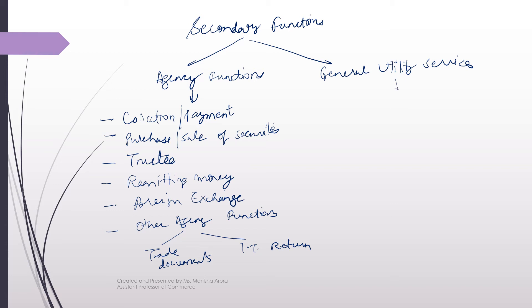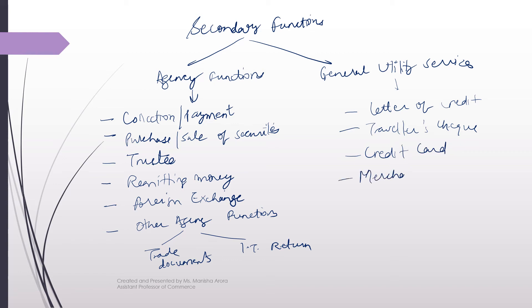In general utility services, we discussed the issuance of letter of credit — the bank issues a letter of credit on your behalf. It issues travelers checks and credit cards on your behalf. It provides merchant banking services. It provides depository services by opening a DMAT account facility. And the bank provides locker services. So this is all in secondary functions.